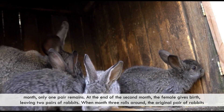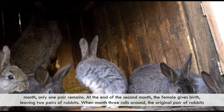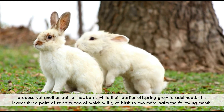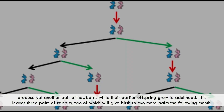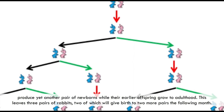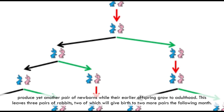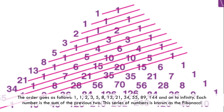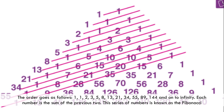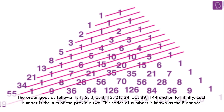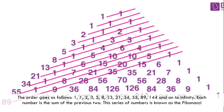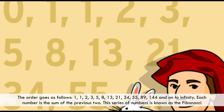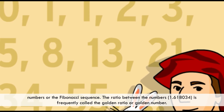At the end of the second month, the female gives birth, leaving two pairs of rabbits. When month three rolls around, the original pair produce yet another pair of newborns, while their earlier offspring grow to adulthood — leaving three pairs, two of which will give birth to two more pairs the following month. The order goes: 1, 1, 2, 3, 5, 8, 13, 21, 34, 55, 89, 144, and on to infinity. Each number is the sum of the previous two. This series is known as the Fibonacci numbers or the Fibonacci sequence.